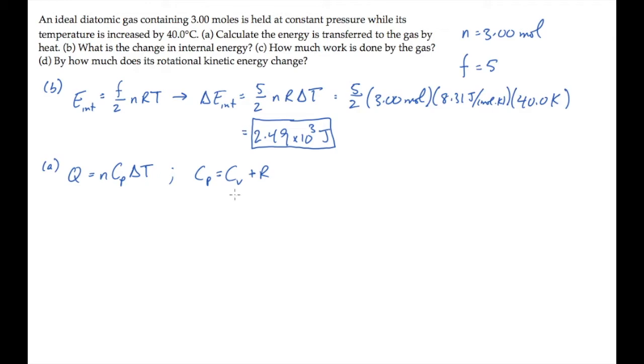For a diatomic gas, the specific heat at constant volume is 5/2 R. So Cp equals 7/2 R. We can substitute this